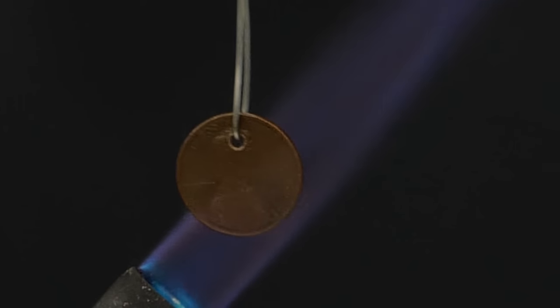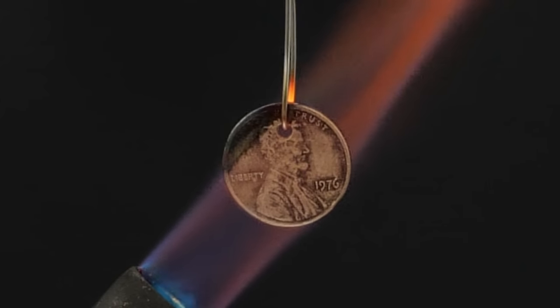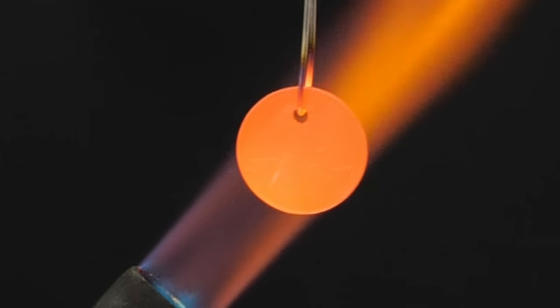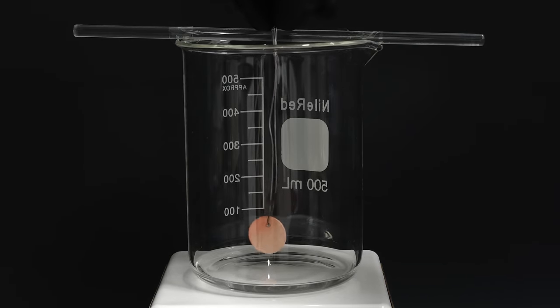All I need to do is get a blowtorch and heat it up until it's red hot. Then, I can lower it into the beaker and hold it just slightly above the acetone.